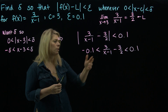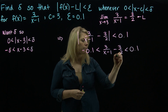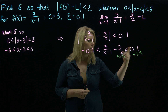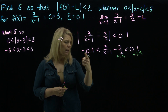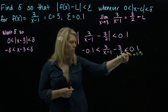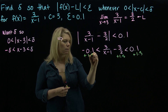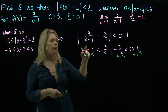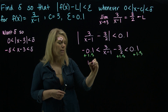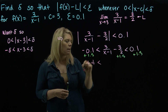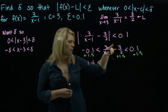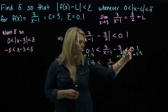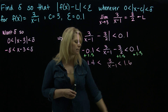Keeping our goal in mind — getting x − 3 trapped between two values — the first thing we'll do is add 3/2 (or 1.5) to both sides of the inequality. After simplifying, we get: 1.4 < 3/(x−1) < 1.6.